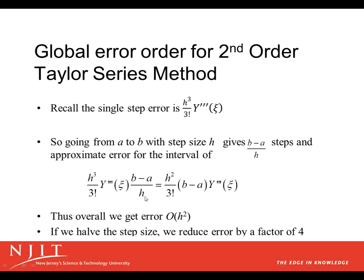The h³ over h brings us an h². And we find the overall error is order h². If we halve the step size, then we would reduce the error by a factor of 4. So if in the previous case, we took h = 1/2 instead of h = 1, we'd have to take two steps, but we'd reduce the error by a factor of around 4.